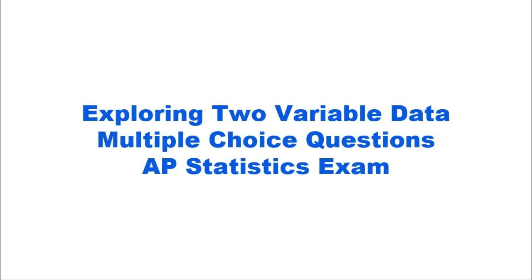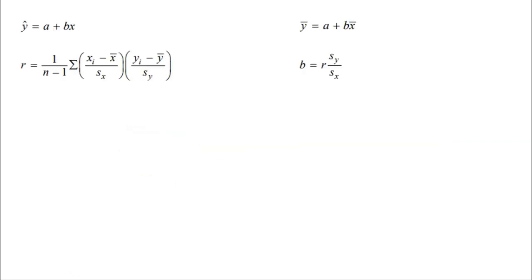Before we look at practice multiple choice questions for exploring two variable data for the AP stats exam, let's look at some formulas on the AP statistics formula sheet that could come in handy. Here we see four different formulas. The first one is going to be very useful — this is the least squares regression line, or a regression model for a linear regression line. Y-hat is our predicted value, A is our Y-intercept, B is the slope, and X is the explanatory variable.